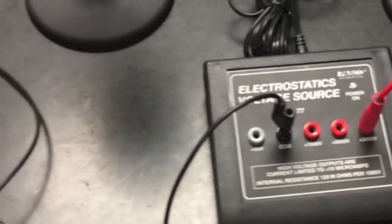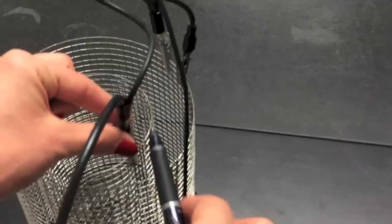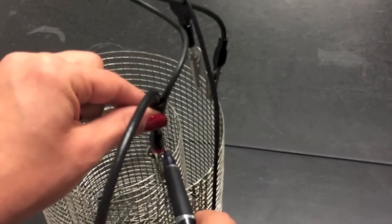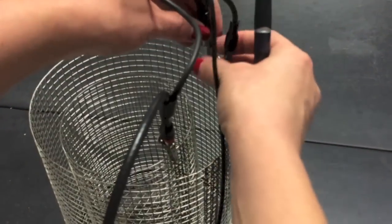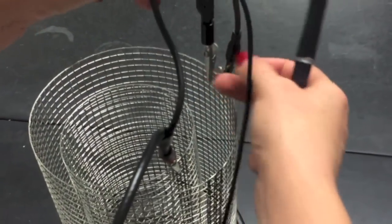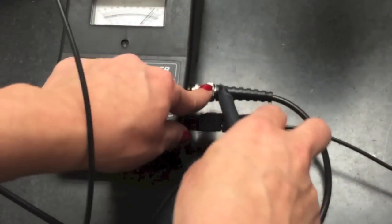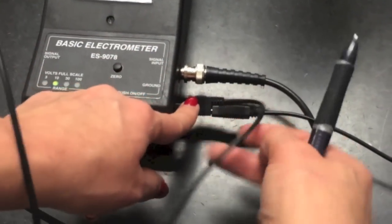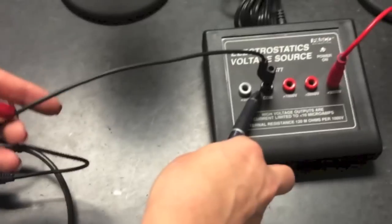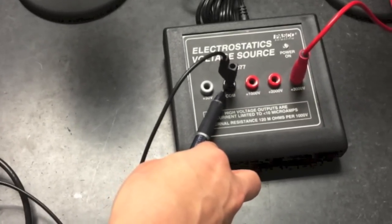Now let's talk about connections. We have a BNC cable from the voltmeter connected with a red alligator clip to the inner side of the Faraday's ice pail mesh. The black side goes to the outside. Then we are grounding this through the electrometer, and from the electrometer we are grounding the whole system through the common side of the electrostatic voltage source.